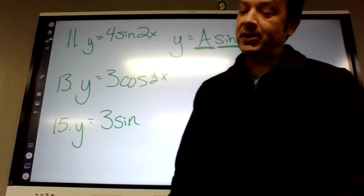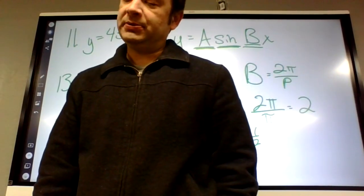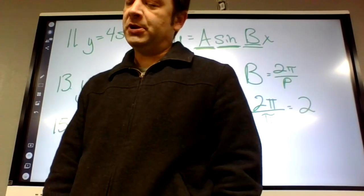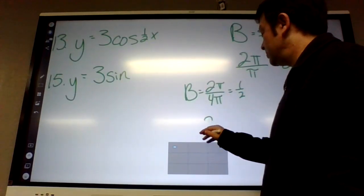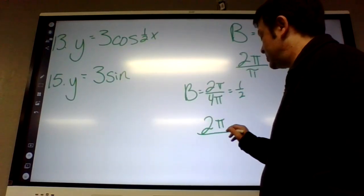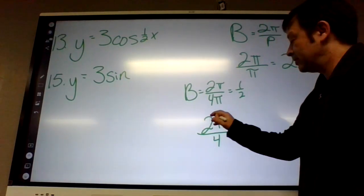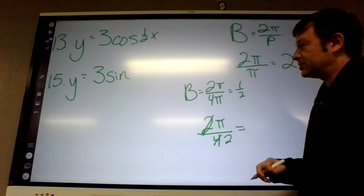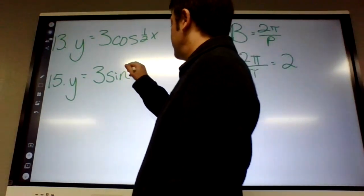What is the period on number three? Four. That's where it starts going up again. So the B value is going to be two pi divided by four, which reduces to pi over two.